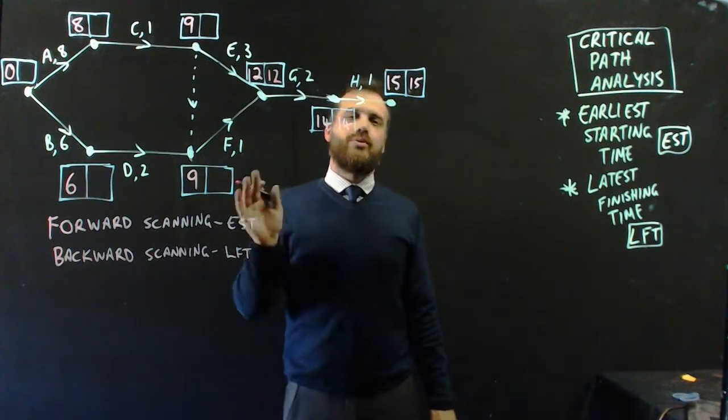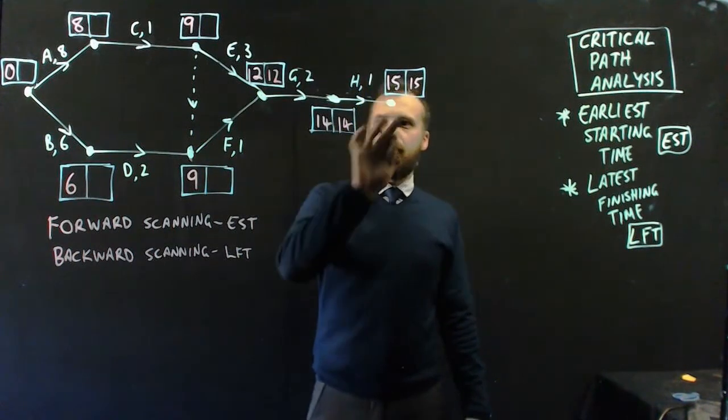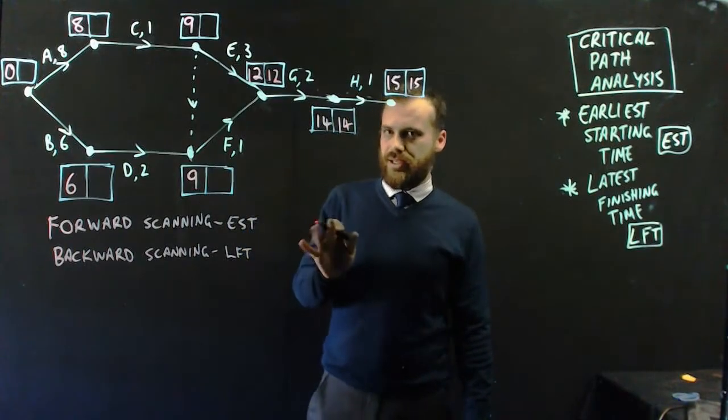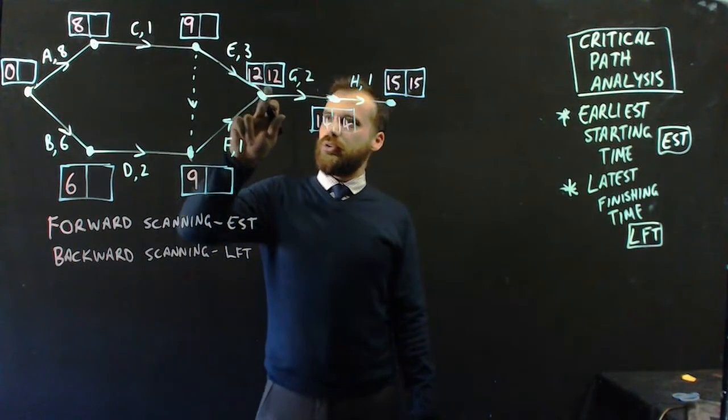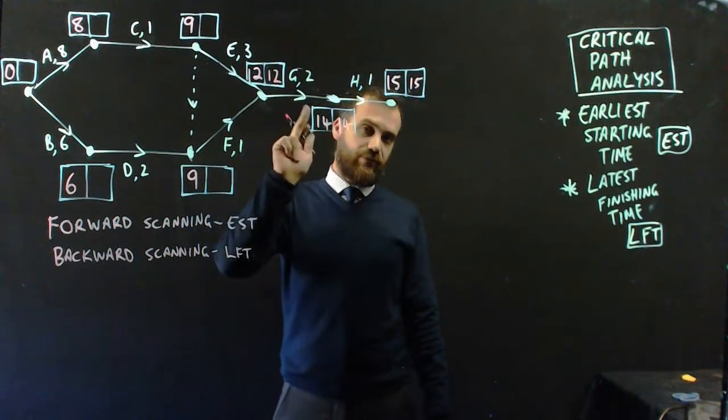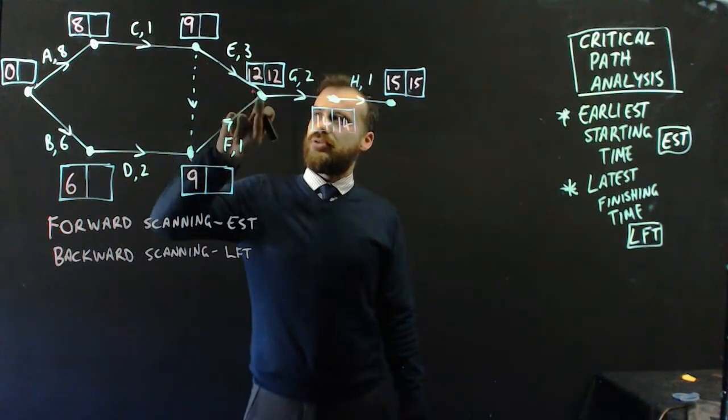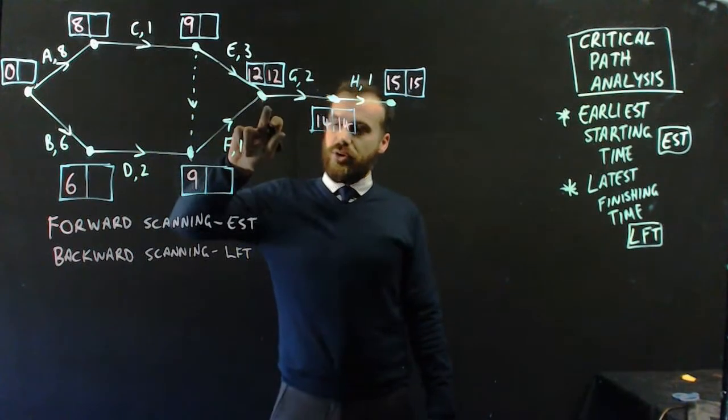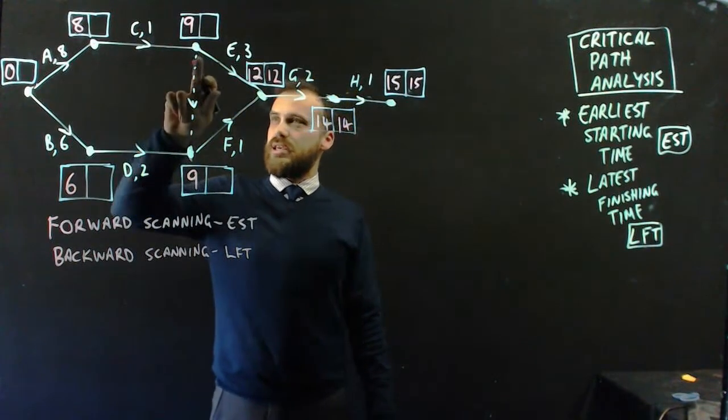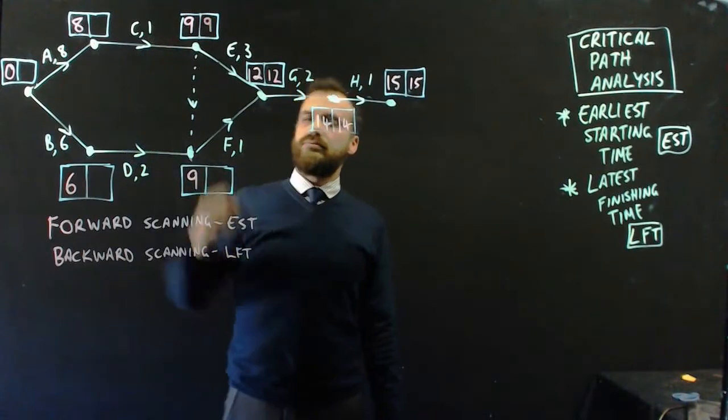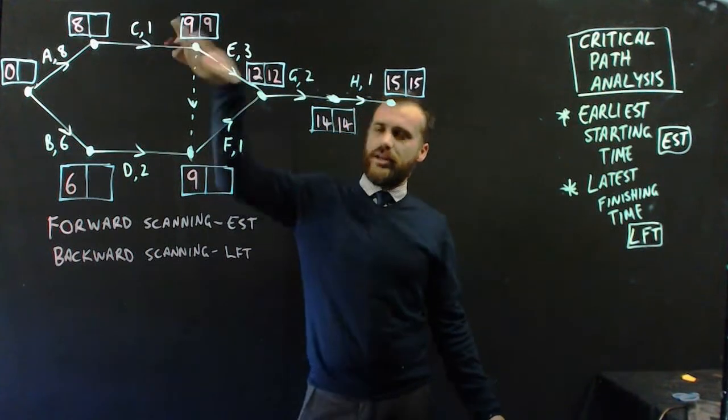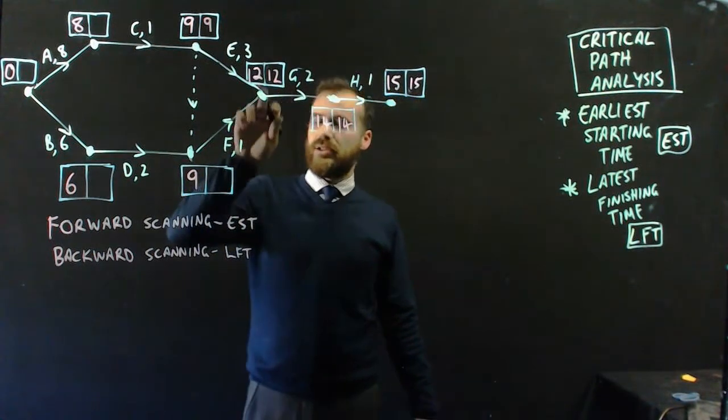And at the moment, you're probably thinking, what a waste of time. Just copy them, right? But this is where it starts getting interesting. Now look here. We have to get to this vertex at the twelve hour mark if we want to finish on time. Now E is going to take three hours. So we have to subtract three from that. The latest that C can finish is the nine hour mark. And you're still thinking, what a waste of time. This is ridiculous. We just keep writing the same numbers in.